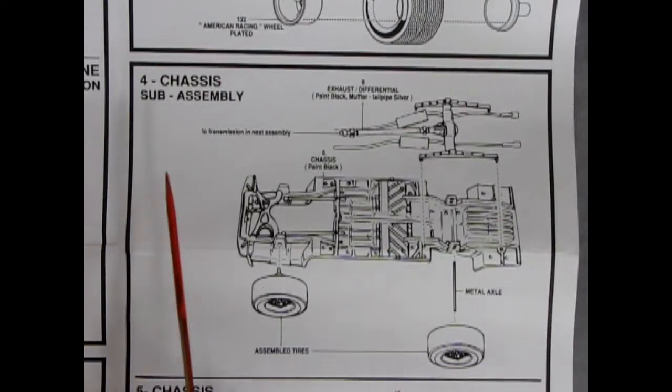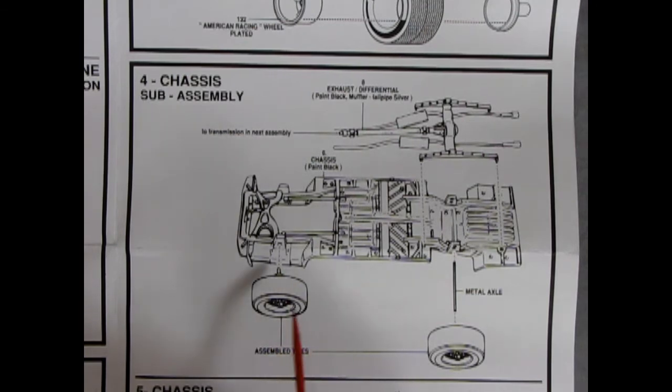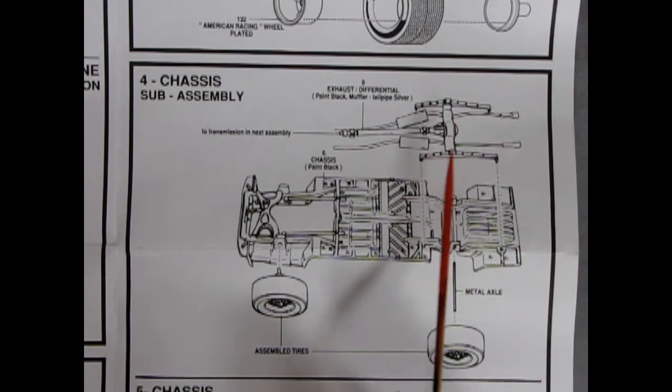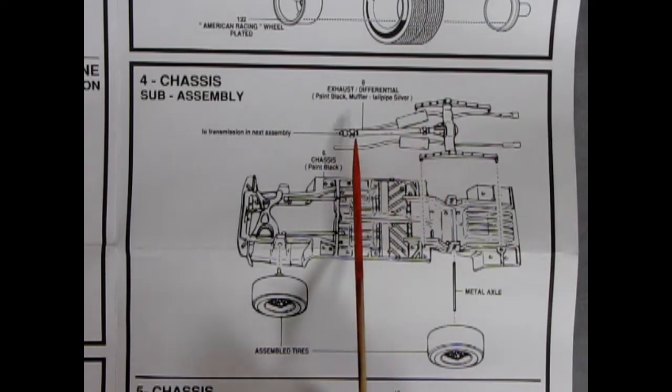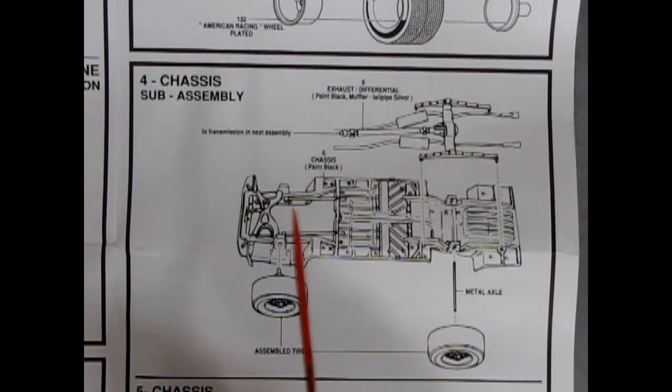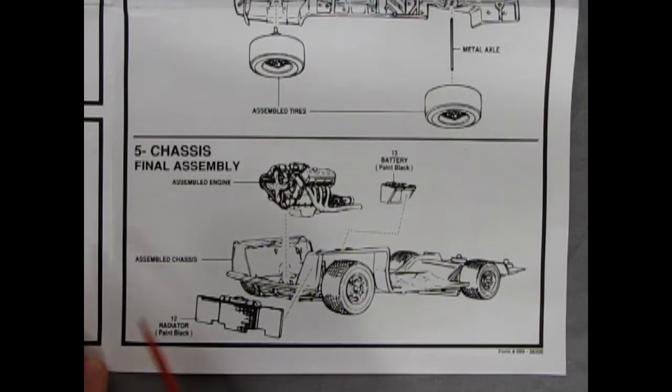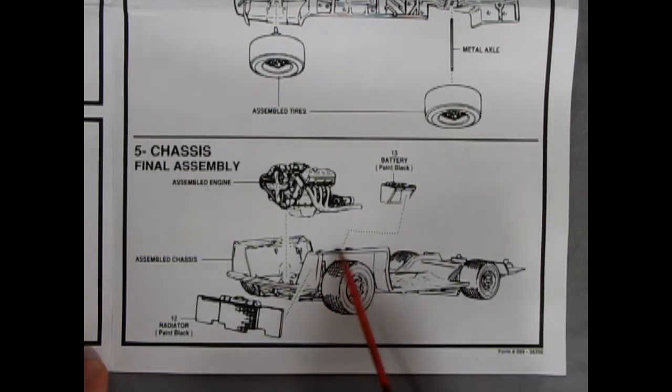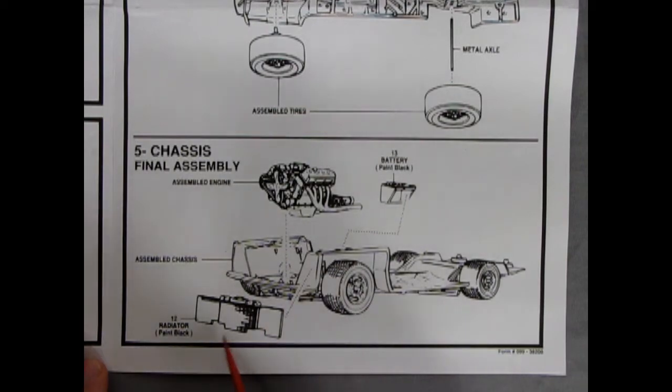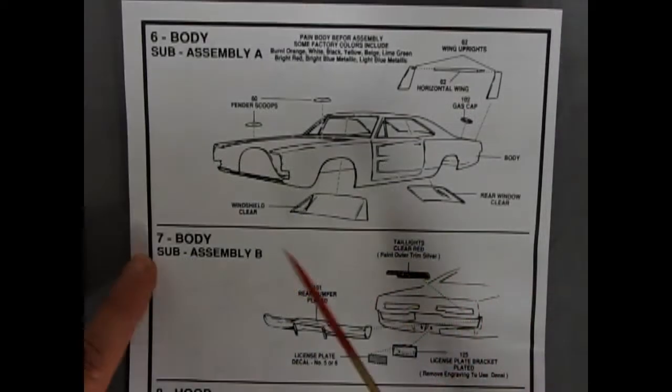Section 4 shows us the chassis sub-assembly. If you saw last week's Dukes of Hazzard edition, you'll see this is the exact same chassis pan with pretty much everything molded in place. Then you get your drop-down rear differential, exhaust pipes and driveshaft all as one complete unit.